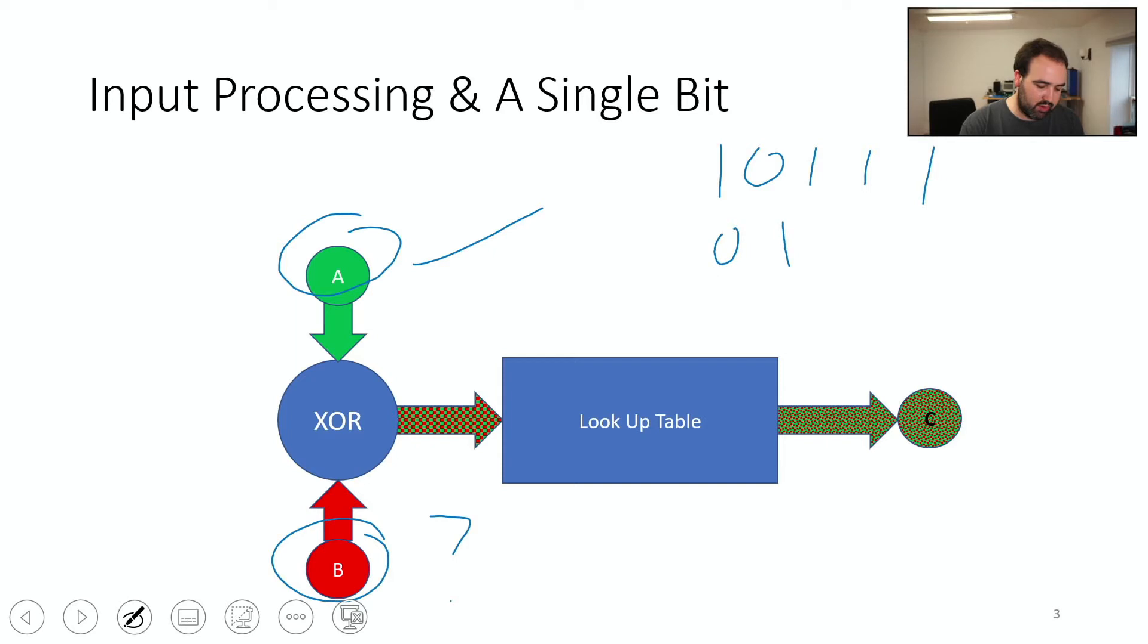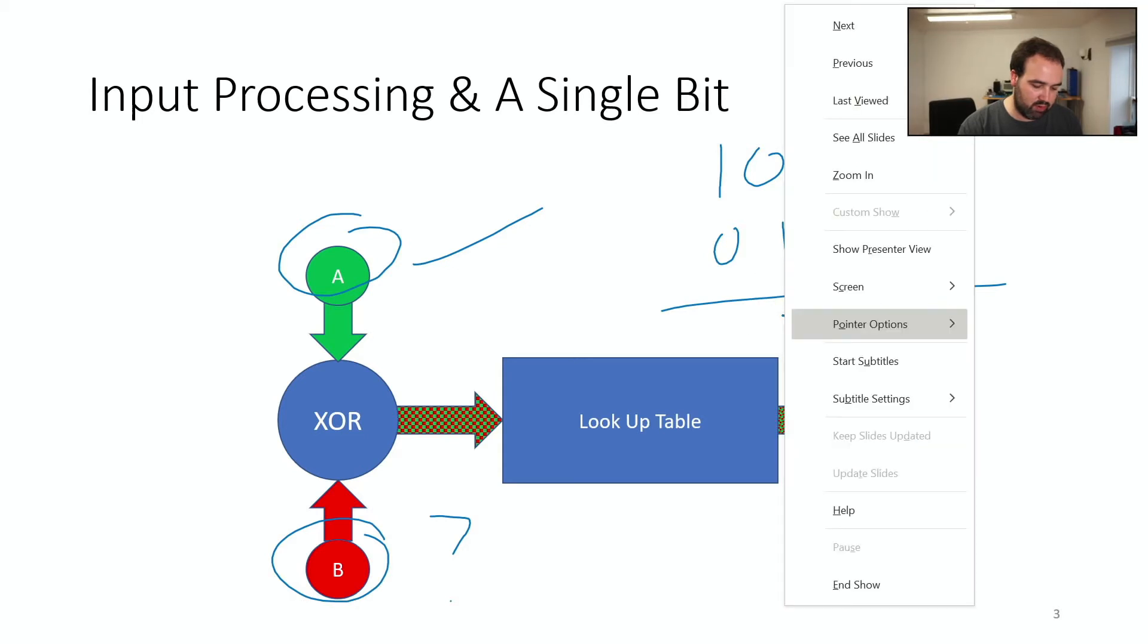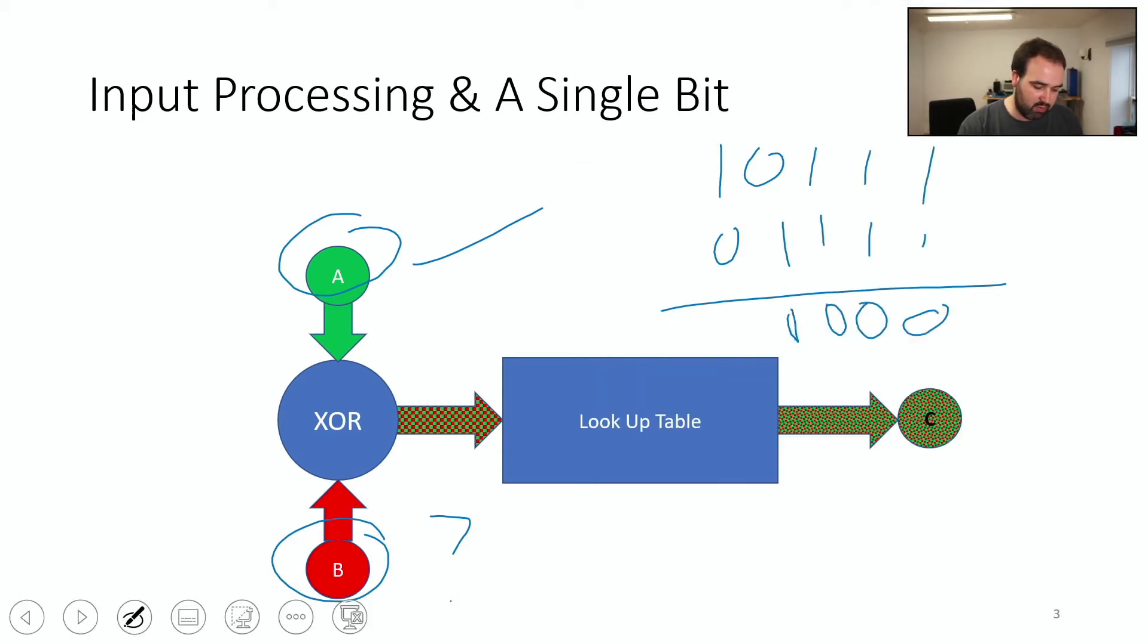1, 1, 1, 1. It just XORs each bit at a time. So you get 0, 0, 0, 1. I didn't line these up very well, sorry. 1, 1. So it's just XORing each of the input bits.